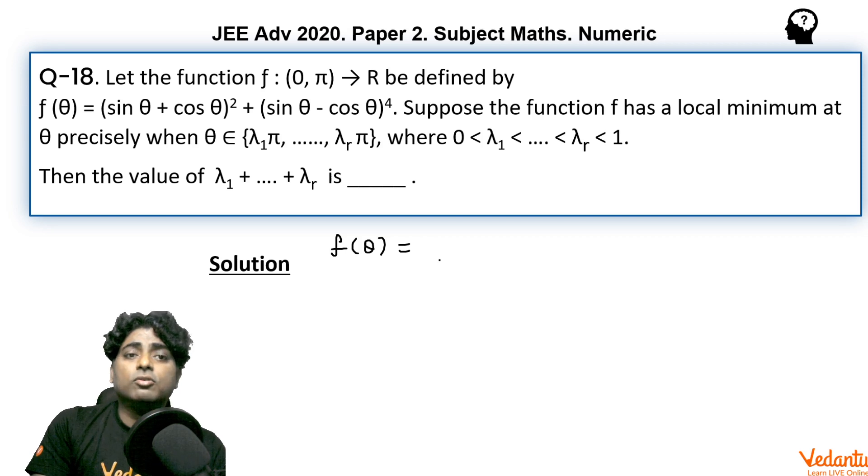Here it demands simplification because we know (sin θ + cos θ)² is sin² θ + cos² θ + 2sin θ cos θ, which is 1 + sin 2θ. And (sin θ - cos θ)⁴ can also be expressed in terms of sin 2θ.